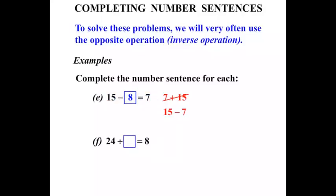This question here. 24 divided by something equals 8. Again you might know the answer, and if you do, that's great. But let's do the inverse operation idea. We've got the 8. The opposite of divide is times, and we've got 24. So we write 8 times 24. And when we work that out, we get 192.